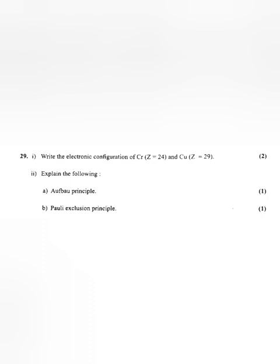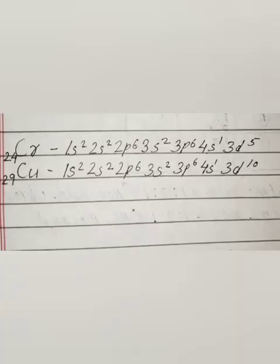Question 29: Write the electronic configuration of chromium and copper. Answer: Chromium: 1s2 2s2 2p6 3s2 3p6 4s1 3d5. Copper: 1s2 2s2 2p6 3s2 3p6 4s1 3d10.